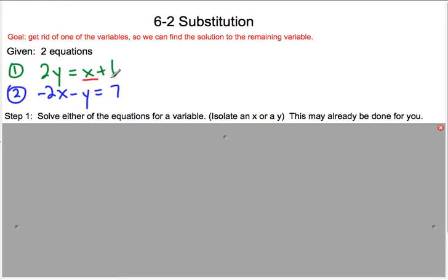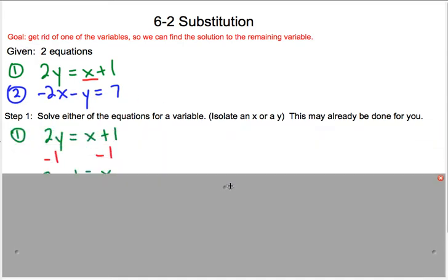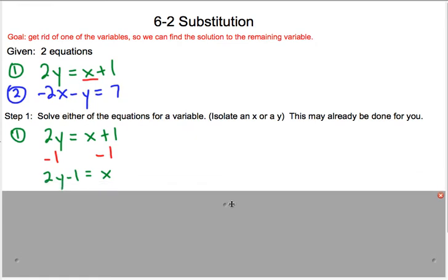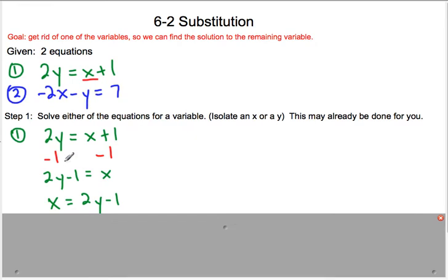So we're going to solve for this x just by subtracting 1 from both sides. I subtract 1 from both sides. Now I have 2y - 1 = x, and then I just flipped it around because I want to know what x is. So x = 2y - 1.